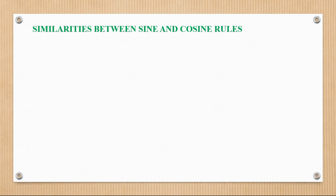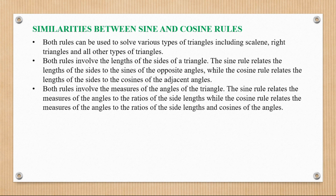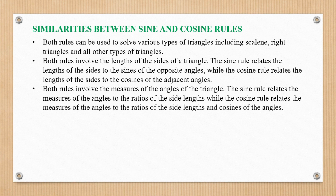There are some similarities between the sine and cosine rules. Both rules can be used to solve various types of triangles, including scalene, right-angled, and all other types. Both involve the lengths of the sides of a triangle. The sine rule relates side lengths to sines of opposite angles, while the cosine rule relates side lengths to cosines of adjacent angles. Both rules also involve the measures of the angles of the triangle.